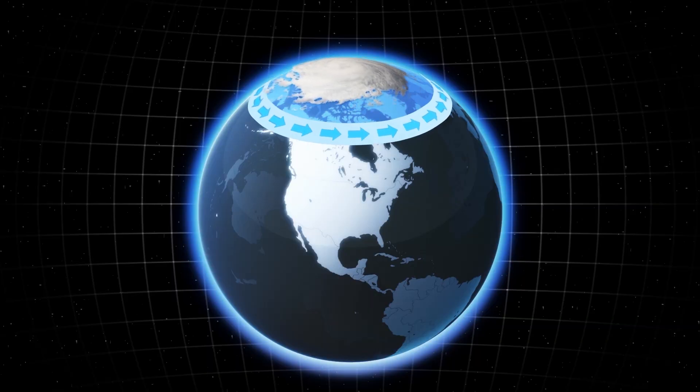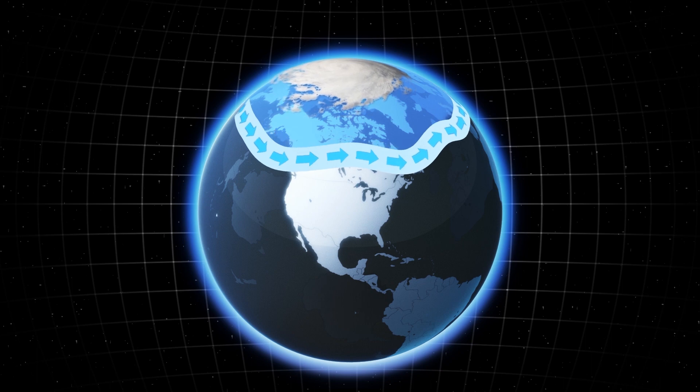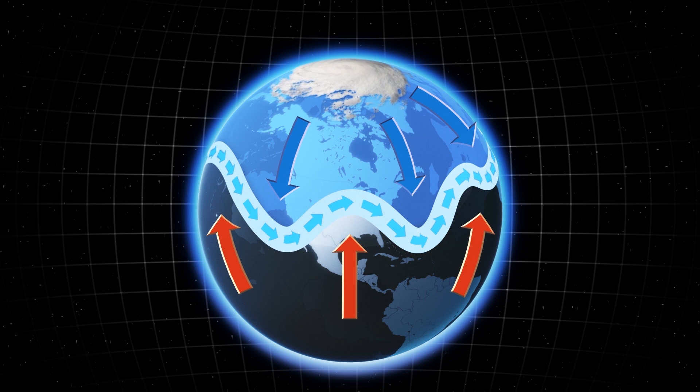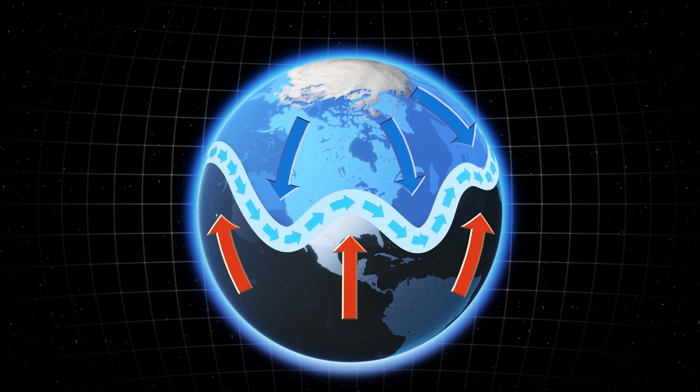The polar vortex steers storms and usually changes its shape and position. But scientists say it's been stuck in one place for an unusually long time. And that's why the U.S. had been having such strangely warm weather over November and the beginning of December.